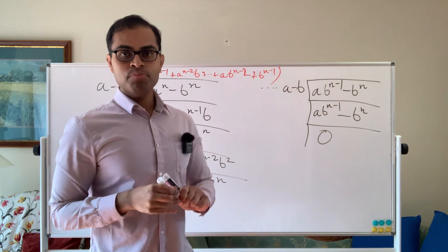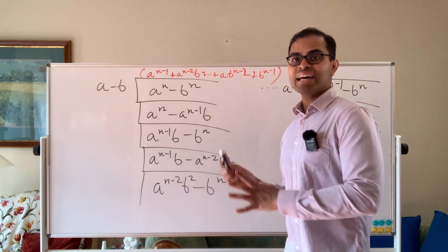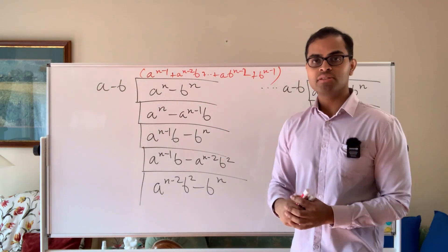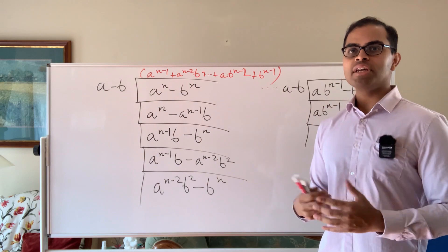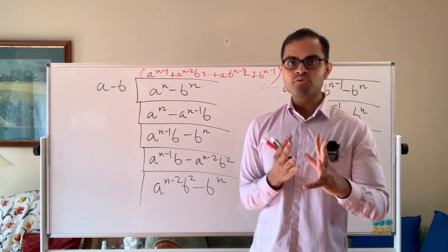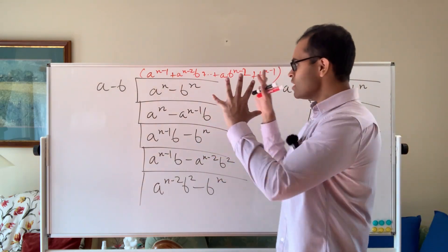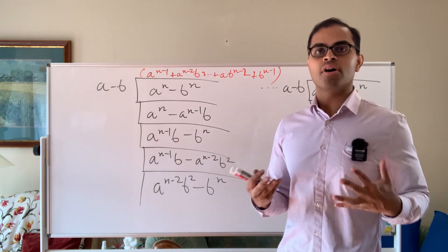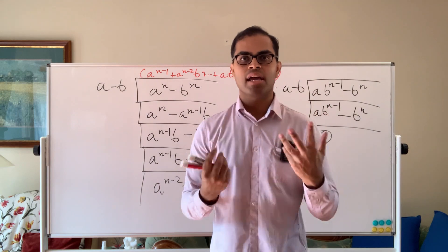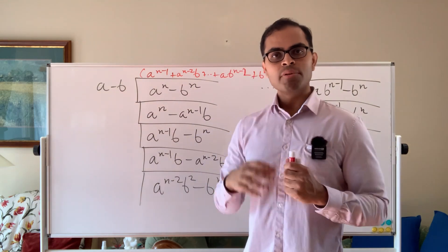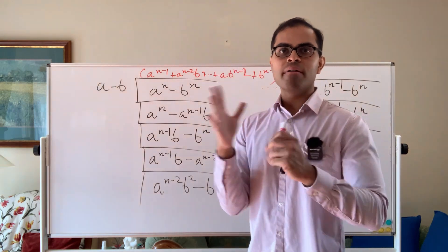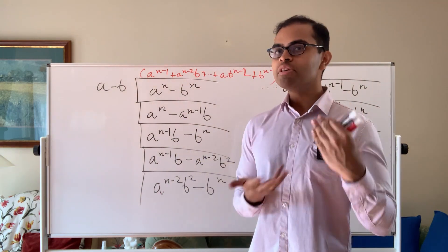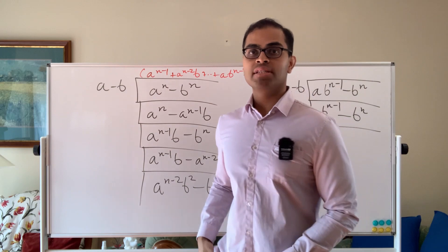That's the proof of the difference of nth powers formula and the reasoning of how you'd come up with it — this is how someone would discover it. Polynomial long division is a formal substitute for guesswork; it's a formal process you can apply to any problem, though you could also experiment and guess it by patterns, which is presumably what the first person to find it did.